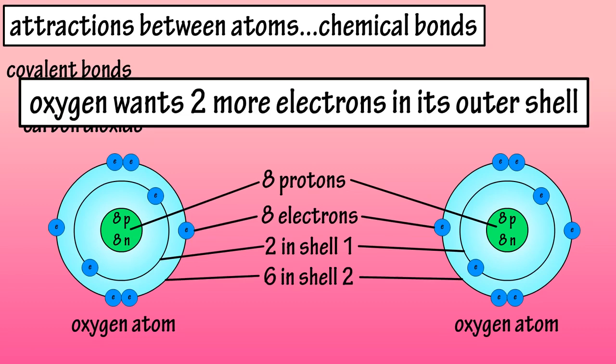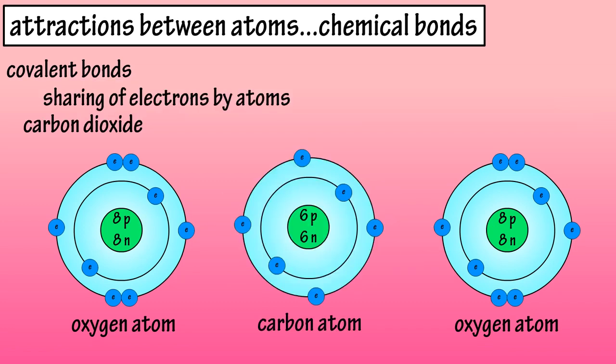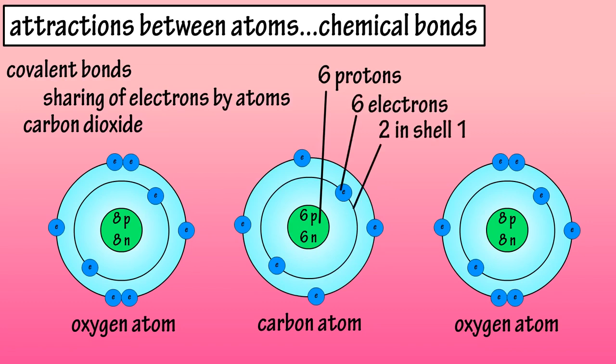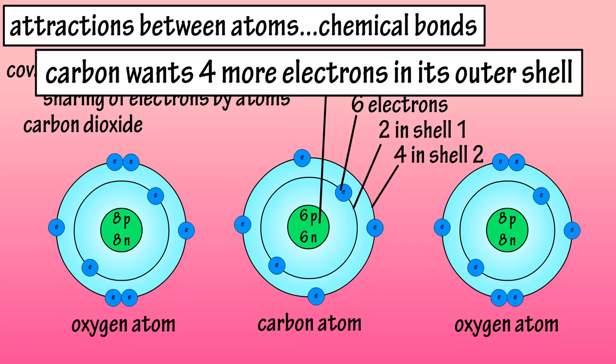So, oxygen atoms want two more electrons for their outer shell. Carbon has an atomic mass of six. Six protons and six electrons. Two in the inner shell, and four in the outer shell. So, it wants four more electrons for its outer shell.